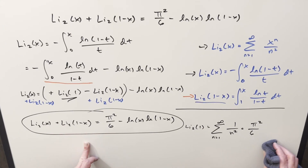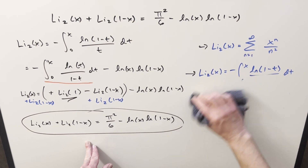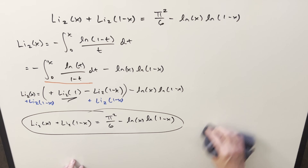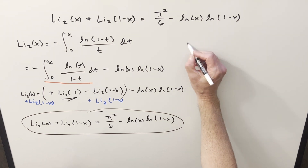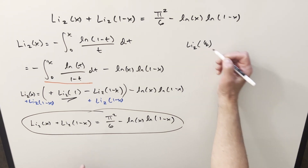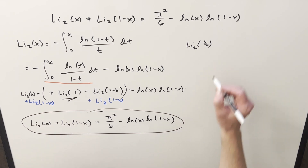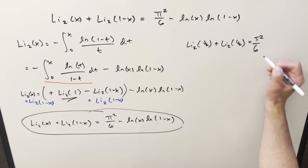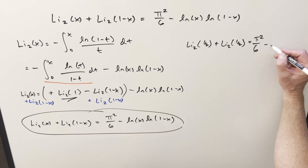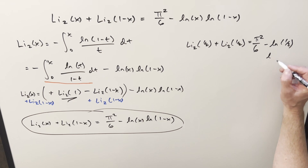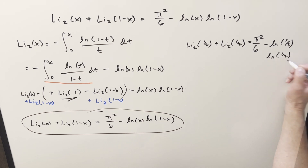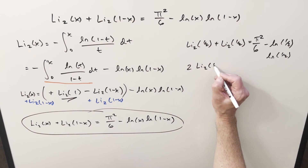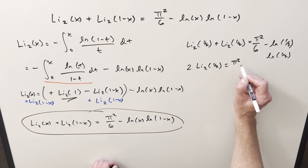For a really easy example on how to use this formula — something I did in a previous video, but it's a good example — what happens when x is 1/2? Using the formula at 1/2, we have Li₂(1/2), but then 1 − x is also 1/2, so we get Li₂(1/2) again. We have π²/6 minus ln(1/2) · ln(1/2), so the left side has two copies of Li₂(1/2), equal to π²/6 minus ln²(1/2).